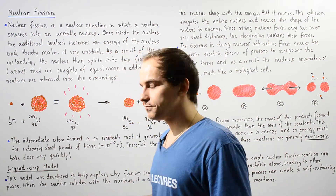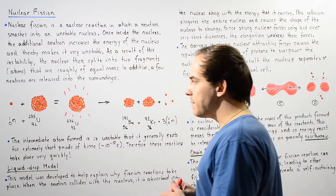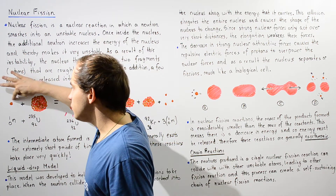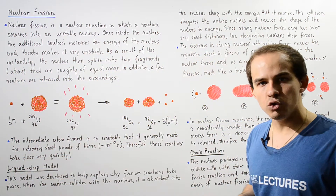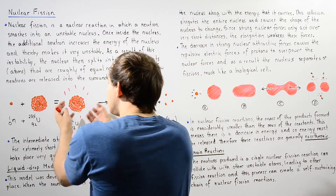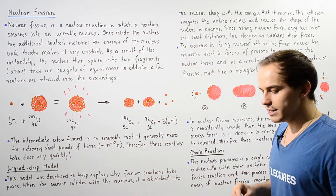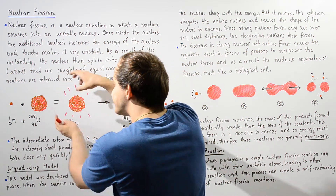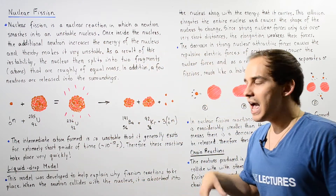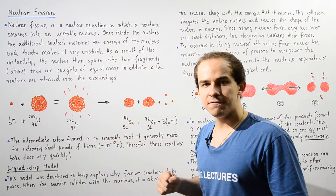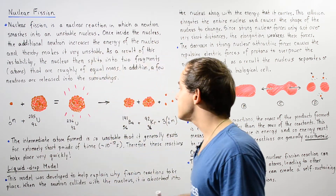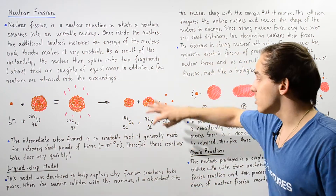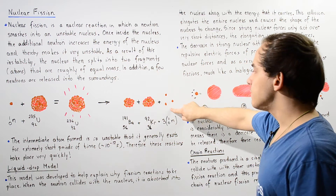To see exactly what we mean, consider this example: we have the uranium-235 isotope and a single neutron that collides into that nucleus, forming what we call the compound nucleus. This compound nucleus increases in energy, destabilizing the structure, and as a result it fissions or breaks down into two atoms — barium and krypton — while several neutrons are released into the surroundings as free neutrons.